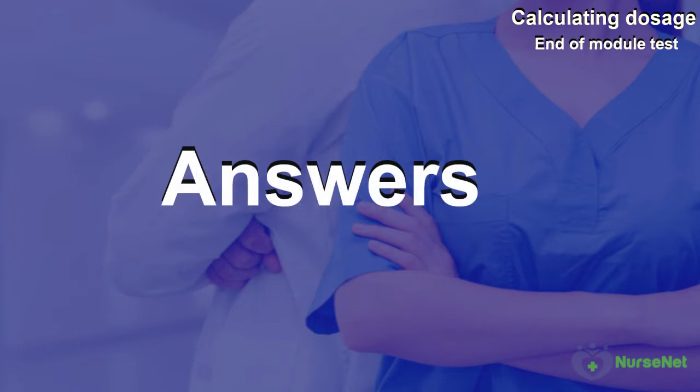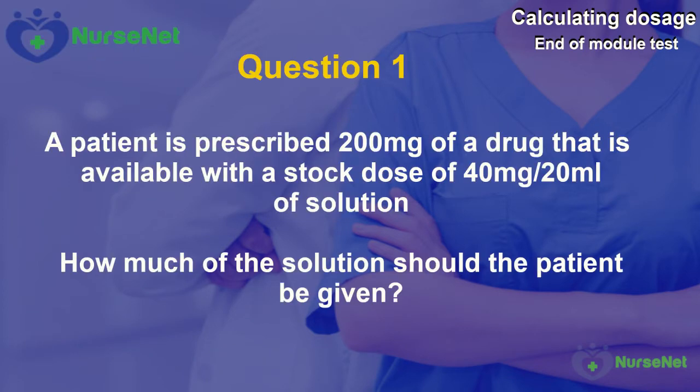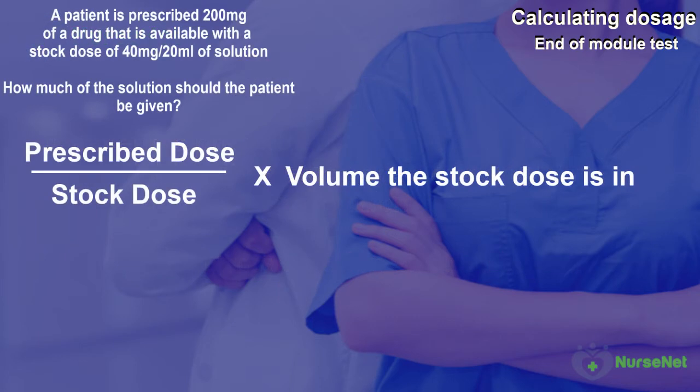OK so let's look at the answers. Question 1. A patient is prescribed 200mg of a drug that is available with a stock dose of 40mg per 20ml of solution. How much of the solution should the patient be given? We should have identified that we need to use our basic dose calculation, which is prescribed dose divided by the stock dose multiplied by the volume the stock dose is in.